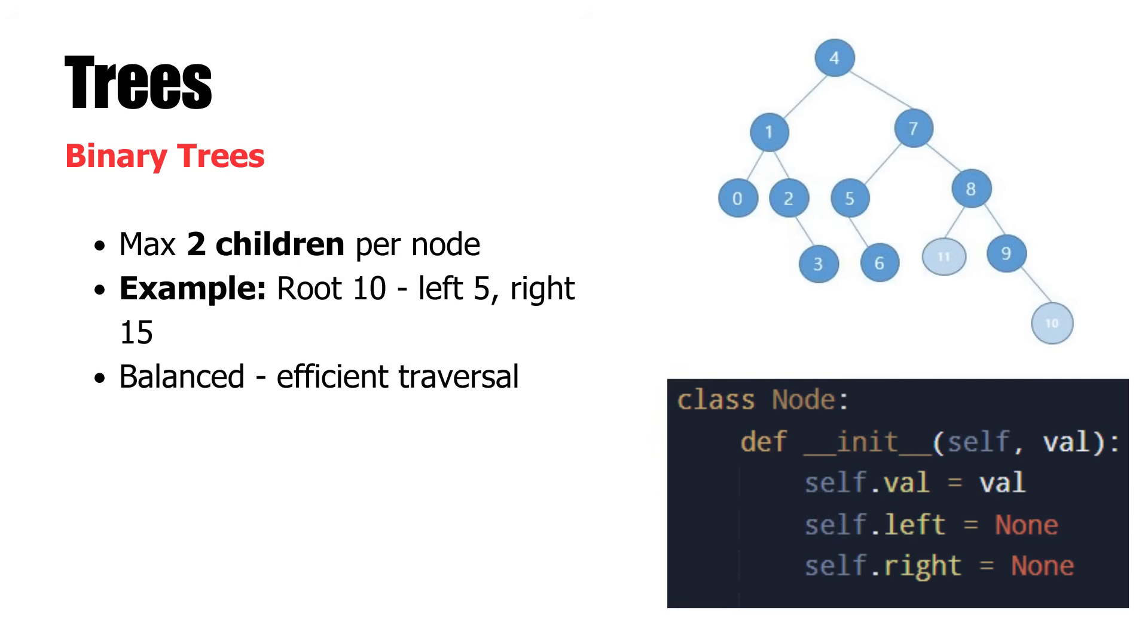Let us commence with binary trees. In a binary tree, each node can have at most two children, usually labeled the left child and the right child. The structure offers a trade-off between simplicity and efficiency. A tree whose root node has the number 10 with two branches, the left child with the number 5 and the right child with the number 15 is an example. The structure supports orderly traversal and efficient processing of data.